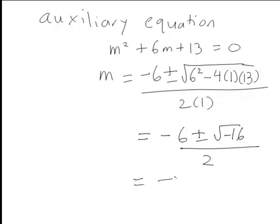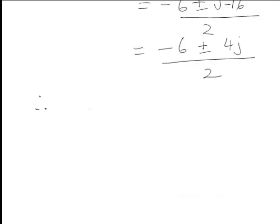So that is going to be negative 6 plus or minus 4j divided by 2. Therefore the roots of our auxiliary equation, we can divide through by 2 here to find that they are of the form m equal to negative 3 plus or minus 2j.